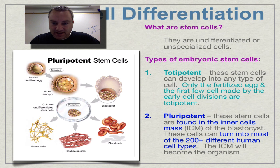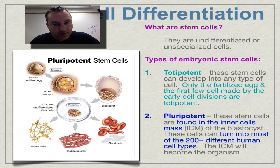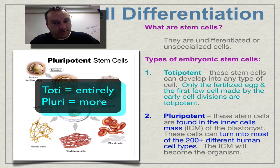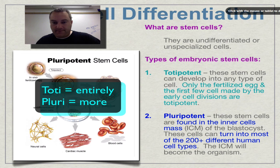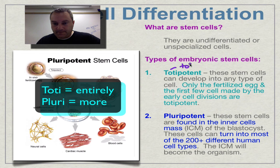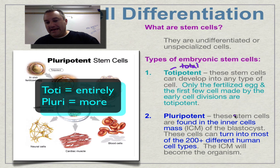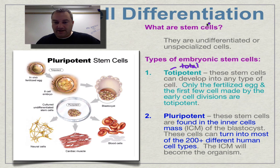Embryonic stem cells come in two types: totipotent and pluripotent. Totipotent simply means totally potent — think of 'toti' as total. These cells can develop into any of the different types of cells that can possibly happen.